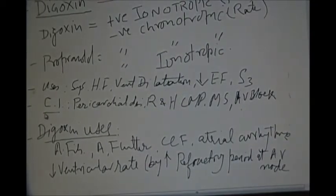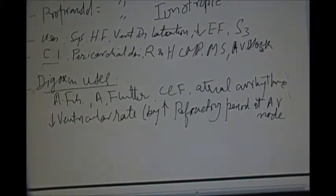What are the contraindications to digoxin? The contraindications are pericardial diseases, restrictive and hypertrophic cardiomyopathies, and AV block.